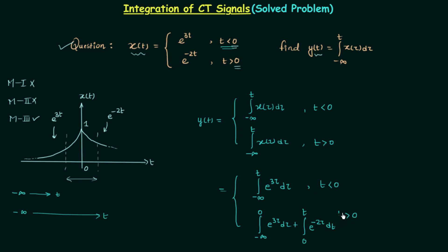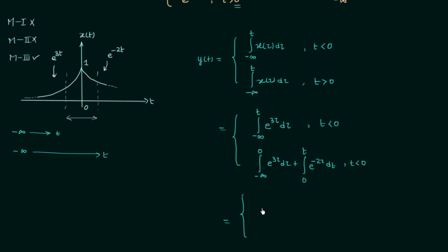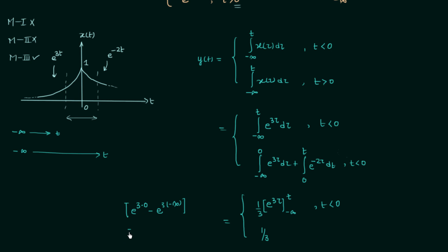This is what we have in the second case and now we can perform the integration to get our final answer. Integrating e^(3τ) gives e^(3τ) divided by 3, with lower limit minus infinity and upper limit t when t is less than 0. When integrating e^(3τ) from minus infinity to 0, the upper limit is replaced by 0, giving 1/3 times [e^(3×0) minus e^(3×(−∞))]. Since e^0 = 1 and e^(−∞) = 0, this equals 1/3.